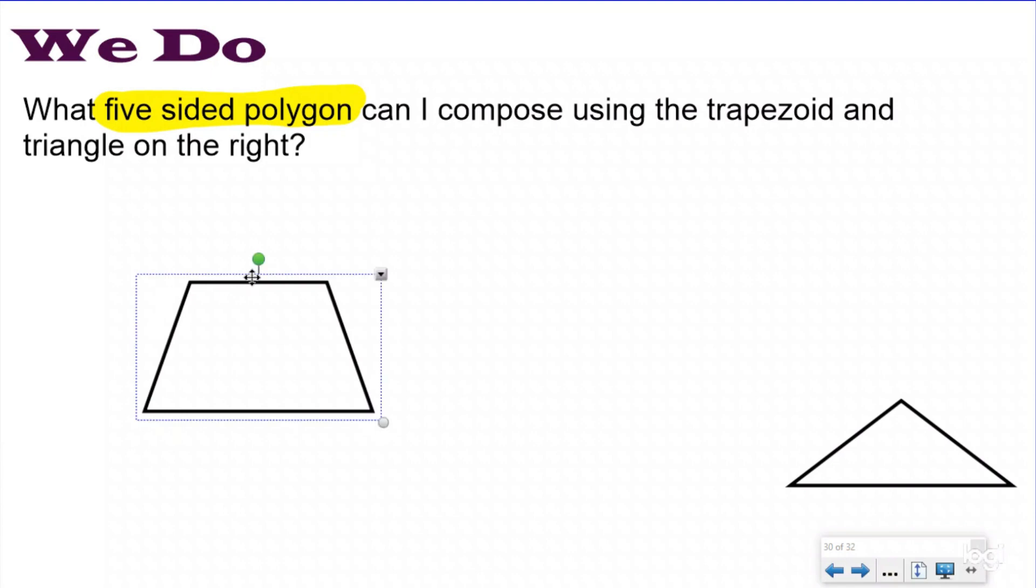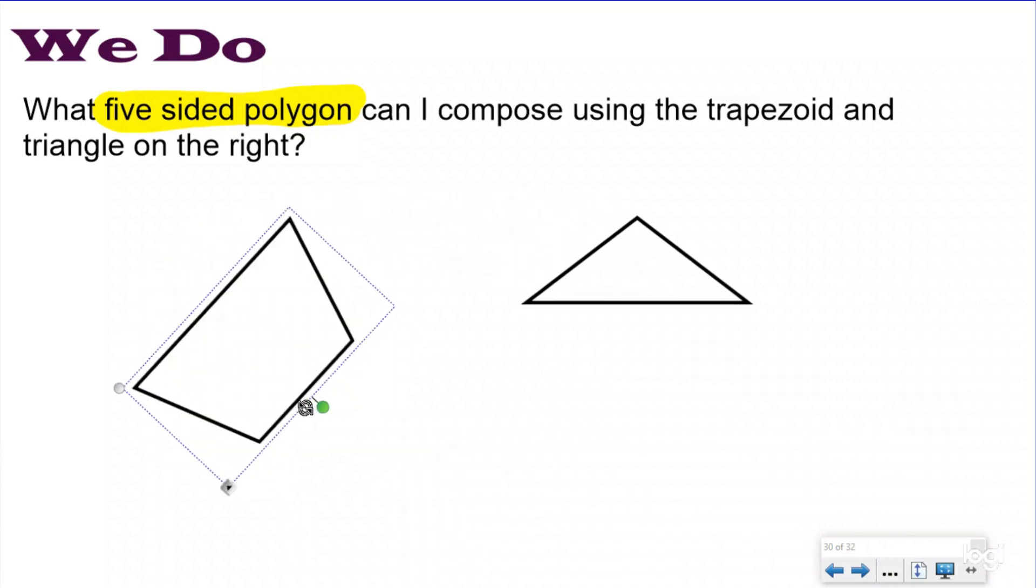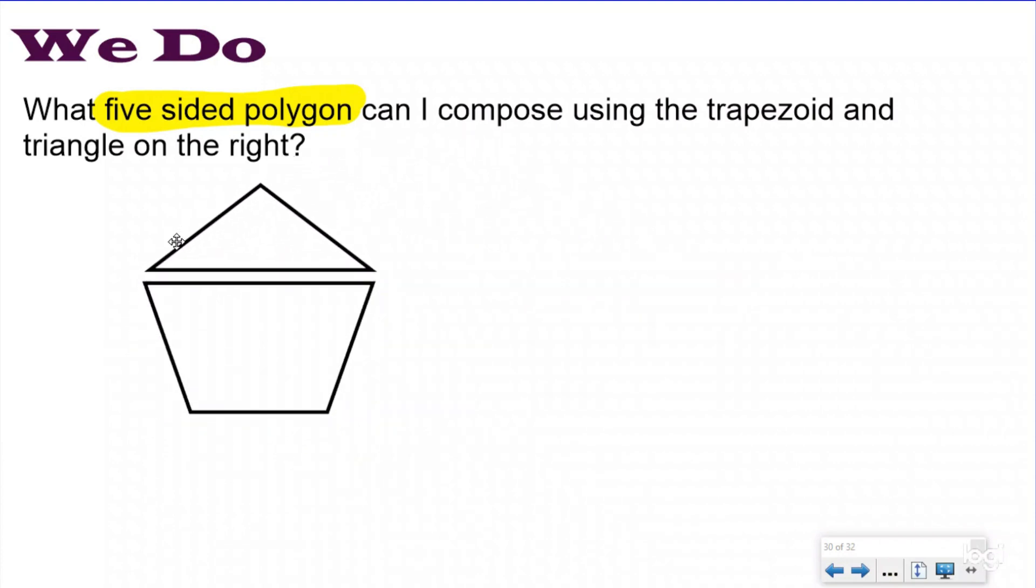I want to make a pentagon using my trapezoid and triangle. Remember you might have to flip it around. I'm going to put it together first like this and see, oh, I made a house, not a pentagon. Maybe what if I flip this trapezoid around? I had to manipulate it. Let's see if I put the triangle back on there. Oh, hey, look, I just made a pentagon.